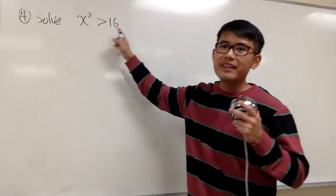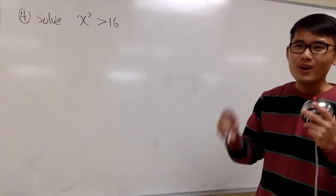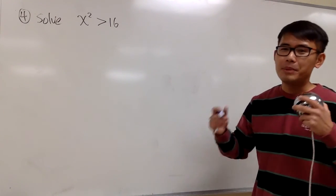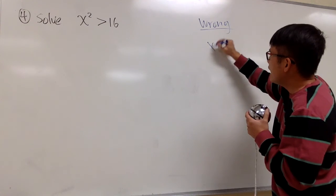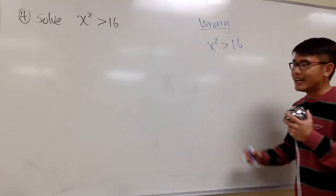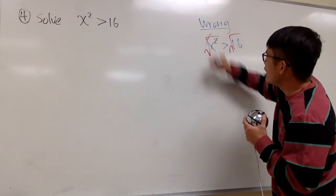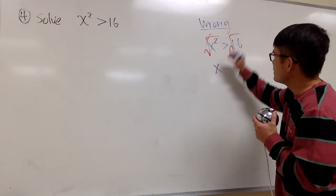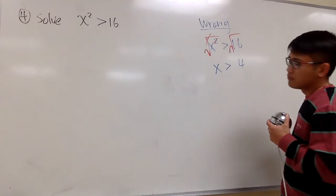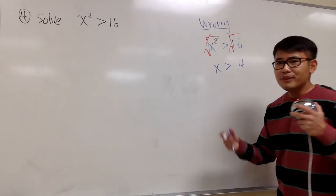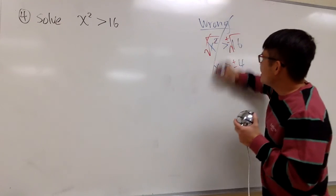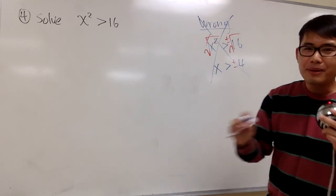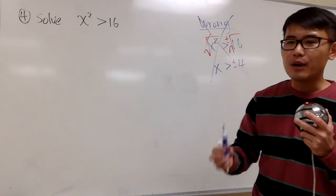One more example. We are going to solve x squared greater than 16. I'm going to show you what's wrong first, because this is one of the popular ones people tend to get wrong. If you look at x squared greater than 16, it seems like you can just take the square root on both sides and say x is greater than 4. This is not correct. And even if you put plus or minus, it's still not correct. You really need to use the number line — find the numbers you care about and test each interval.